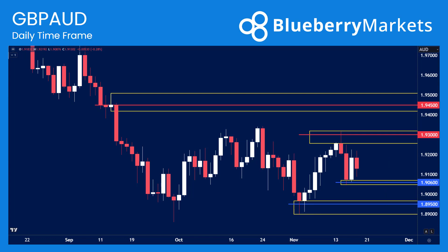Obviously, if we do flip and start to see the pound getting stronger and the Australian dollar starting to weaken, then 1.9060 could be a level of support — price could come in there, hold, and then bounce up towards that 1.9300 handle. So that's something to watch going into this week. I really hope you enjoyed this video analysis — if you did, please leave a thumbs up and I'll catch you in the next one.